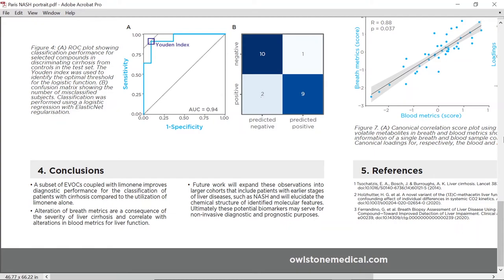Our next steps are to elucidate the identity of these compounds and understand if they can be administered safely as limonin, to standardize exposure before testing. This would increase discriminatory performance for cirrhosis and allow us to extend this approach to early-stage liver disease such as NASH.